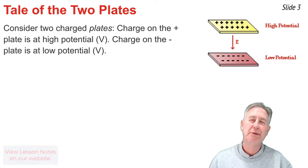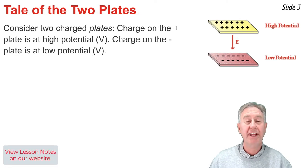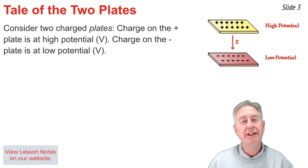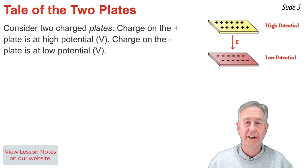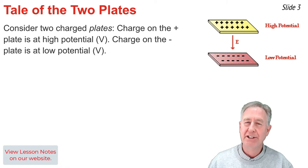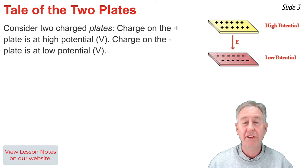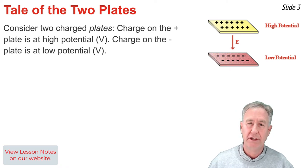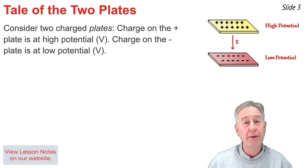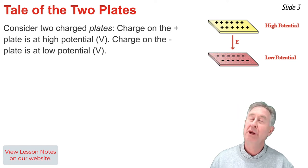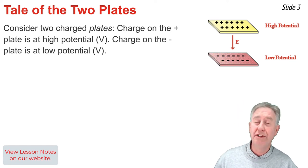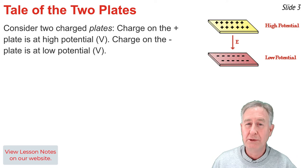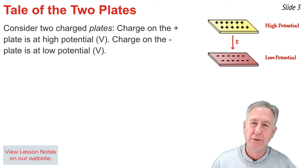Imagine two metal plates aligned parallel to one another and having opposite types of charge. There would be an electric field directed from the positive plate to the negative plate. The positive plate would be at high electric potential, the negative plate at low electric potential. And despite the difference in electric potential, there would be no charge flow between the two plates. What's missing is a wire or conductor that connects the two plates.